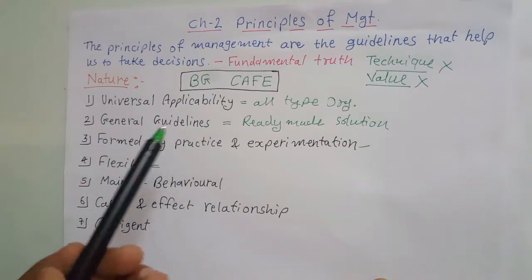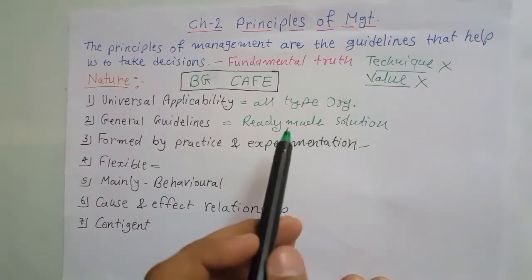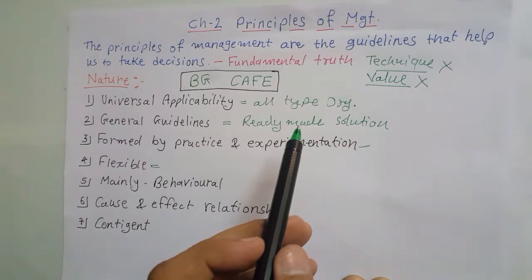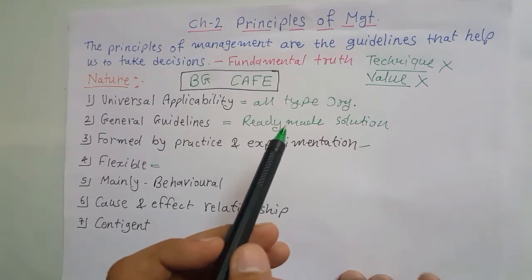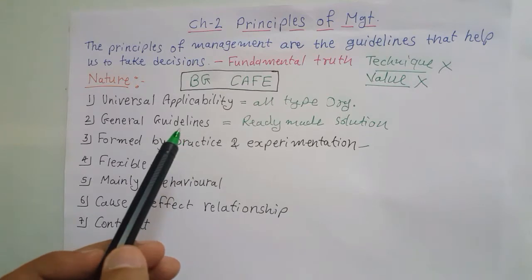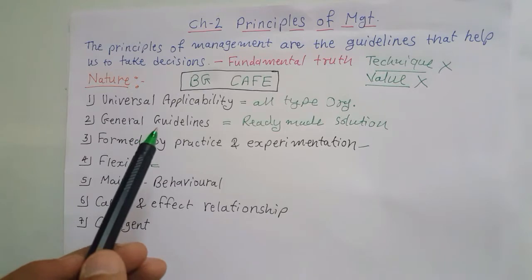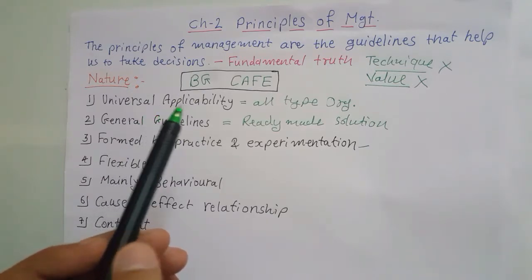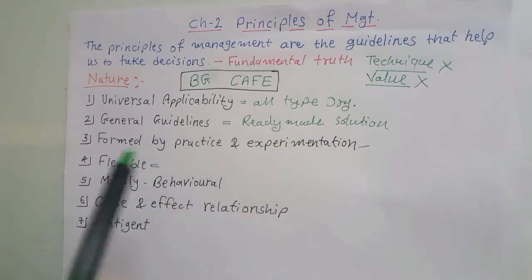Second is general guidelines. These principles of management do not give you a ready-made solution. You have to make some modifications according to your organizational situation and afterwards apply them. So ultimately we can say that they are only general guidelines — they will give you some guidance and understanding, but they will not provide a ready-made solution. You have to take reference from your experience and analysis and according to that apply these principles of management.